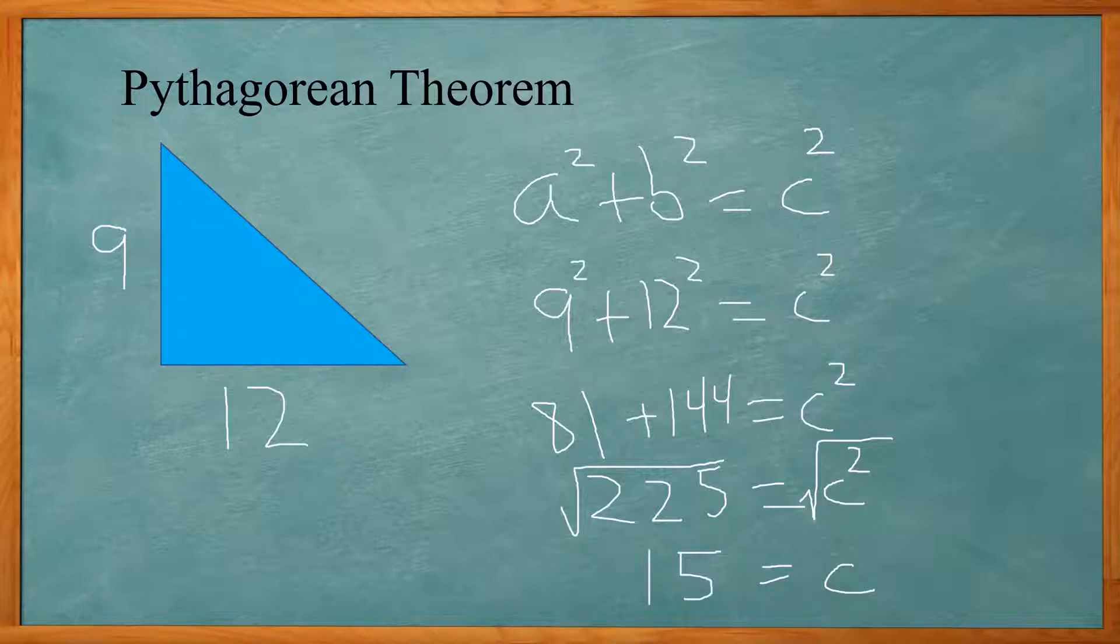225 is a perfect square, and if you practice your perfect squares you can spot this right away. If you didn't know this, you should look at our video entitled Perfect Squares that will help you practice going from 1 to 25.